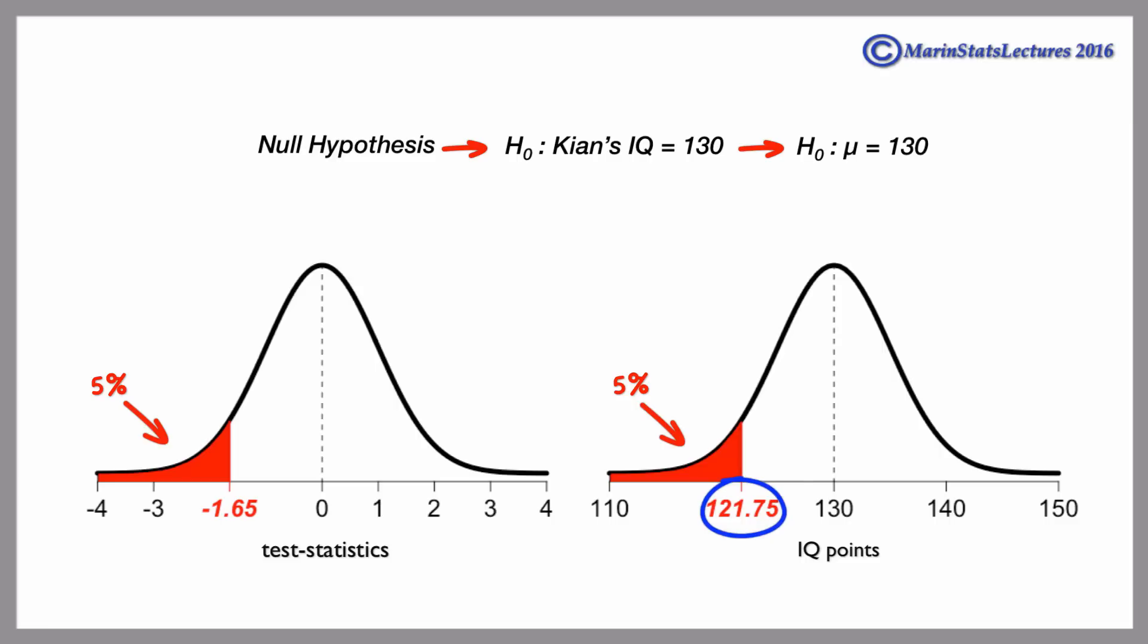We call the IQ of 121.75, or the test statistic value of negative 1.65, the critical values, and the area below them, the rejection region.